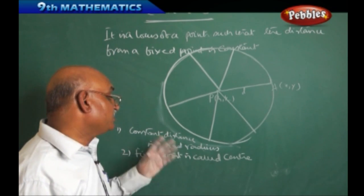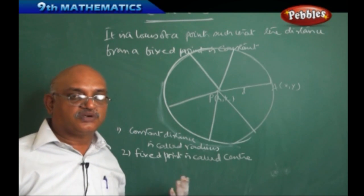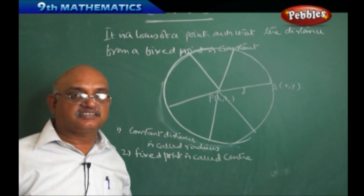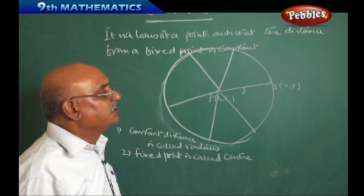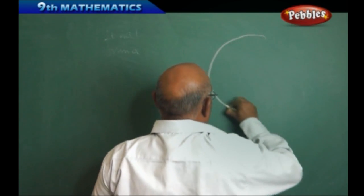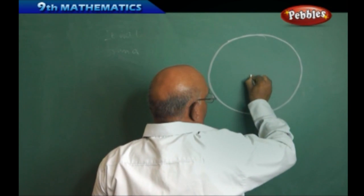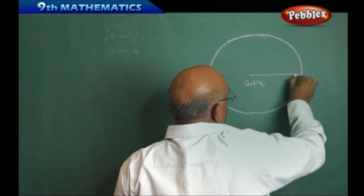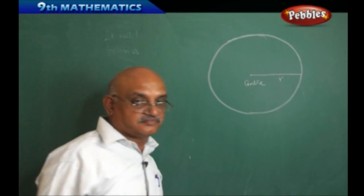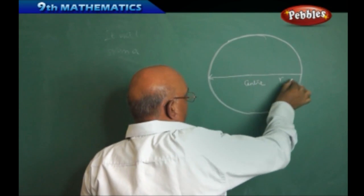The center, where it has to lie — it may lie in the first quadrant, it may lie in the second quadrant, it may lie in the third quadrant — the center may lie at any place. Now, if you take a circle, this fixed point is called the center, and this constant distance is called the radius. Double the radius is called the diameter.